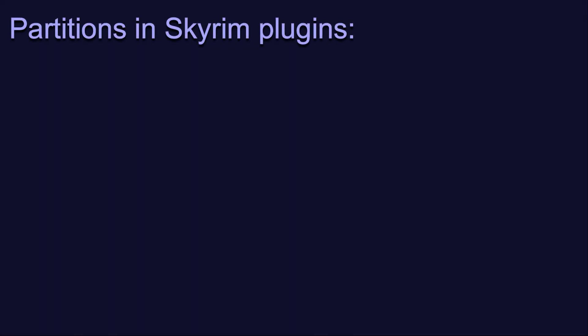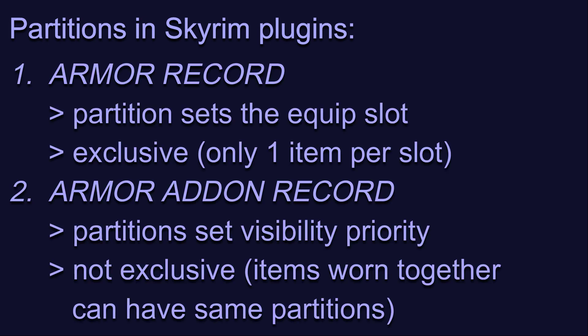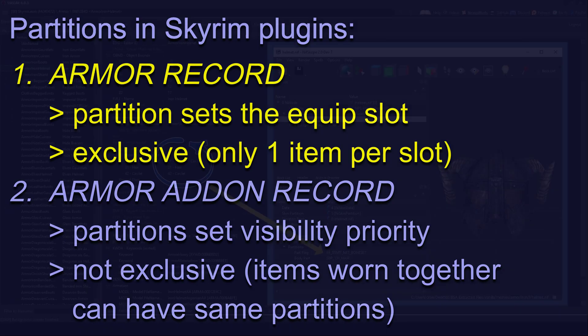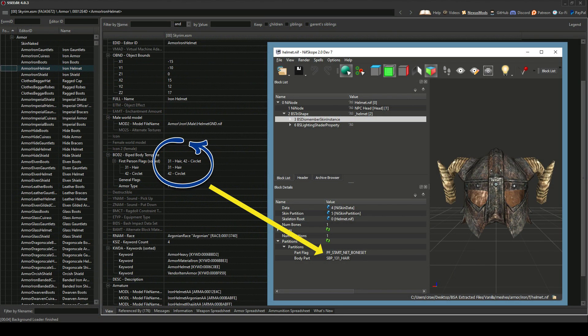Hopefully you remember that there are two places in the plugin where we have to include partition information. In the armor record, we indicate the equip slot for the item. This is exclusive and no two items can be worn in the same slot at the same time. You should indicate at least one partition here that matches at least one of the partitions used in your NIF. Note that you can list more than one, even if the others are not in your NIF, but this will block other items from being worn in that slot, as we've seen for circlets and helmets for example.